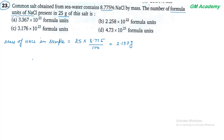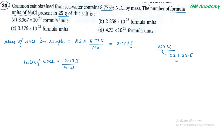Moles of NaCl निकालते हैं: 2.193 divided by molecular weight of NaCl। NaCl का molecular weight = sodium (23) + chlorine (35.5) = 58.5। Number of moles = 2.193 / 58.5।